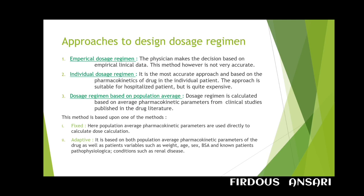In the fixed model, population average pharmacokinetic parameters are used directly to calculate the dosage regimen. It assumes these parameters may be applied without alteration. The practitioner may use the usual dosage suggested in the literature and make small adjustments based on the patient's age and weight. Pharmacokinetic parameters such as absorption rate, bioavailability, volume of distribution, and elimination rate are assumed constant, and the drug follows a one-compartment model.